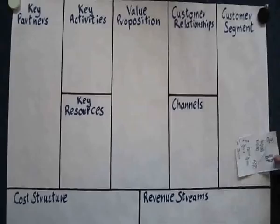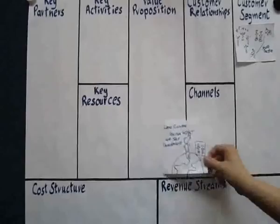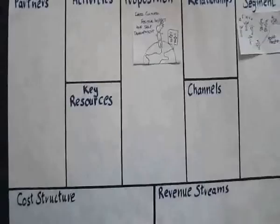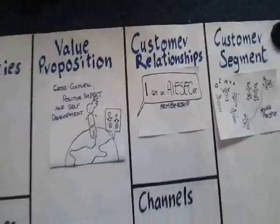In the Global Community Development Program, we start with our first customer segment: Young People. This could be any student, recent graduate, or other young person who wants to join iSEC. To young people, we offer a cross-cultural positive impact and a self-development experience. For this, young people pay an EP fee. To access this value, young people become members of iSEC, which is our customer relationship.